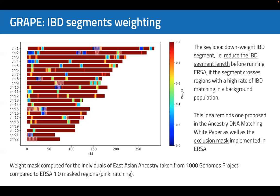For instance, this figure shows the weight mask computed for individuals of East Asian ancestry taken from the 1000 Genomes Project data. High matching regions, where the weight is close to 0, are marked with blue. Regions with a relatively small matching rate are marked with red.